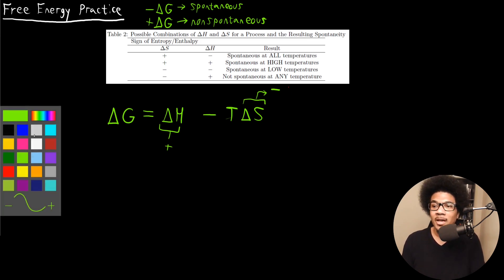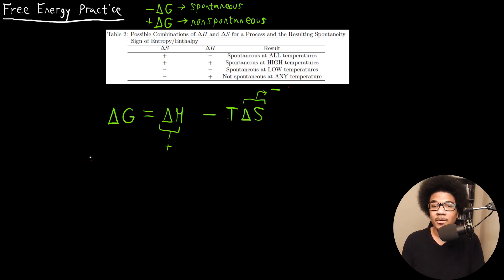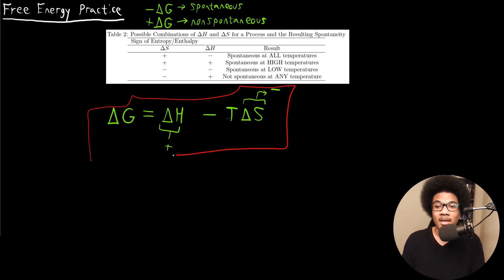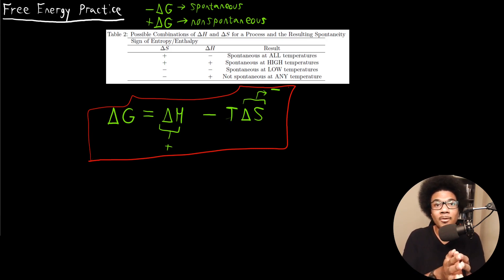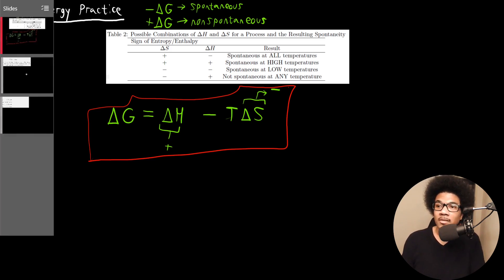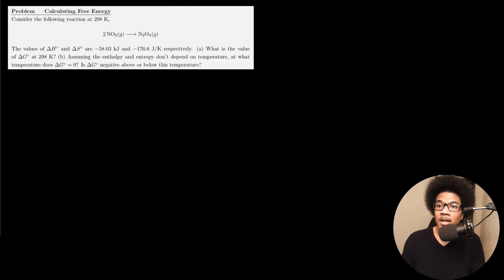This chart can help you decipher whether processes are spontaneous or not. But keep in mind — in order to figure this out, you just have to always go back to the ΔG equation and ask yourself how the signs of ΔH and ΔS affect the result you'll get for ΔG.